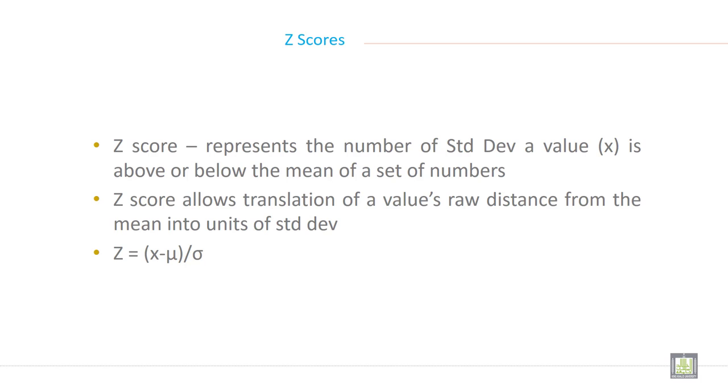What is Z-score? Z-score represents the number of standard deviations a value is above or below the mean of a set of numbers. Z-score allows translation of a value's raw distance from the mean into units of standard deviation.